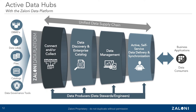In the last slide, we defined the concept of an active data hub. In this slide, we'll show how the Zaloni data platform delivers on that concept. Starting on the left side of the diagram, you'll see the various types of data sources that can be connected or collected via the ZDP. Data producer personas — generally data stewards or data engineers, sometimes with more of an IT slant — are given the ability to add new data sources to the catalog. As part of this process, metadata is captured, data is profiled and classified to help automate the identification of sensitive or potentially not useful data.